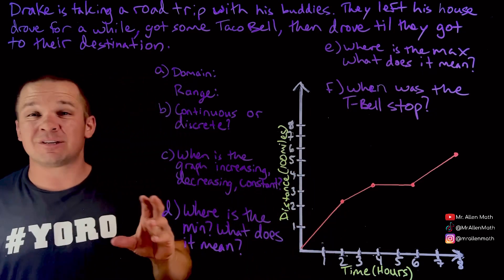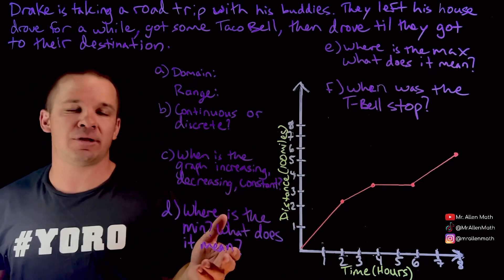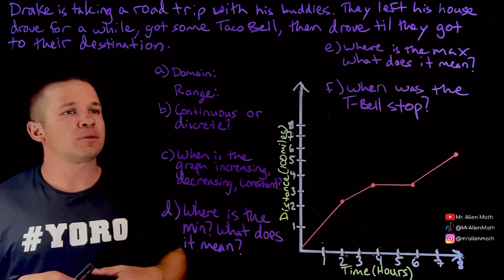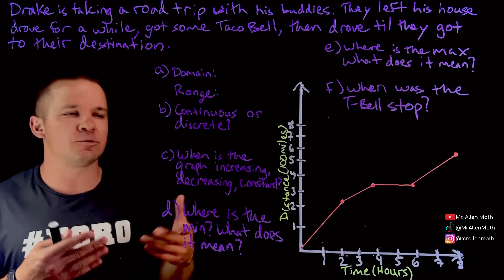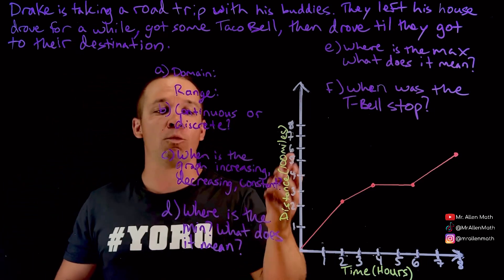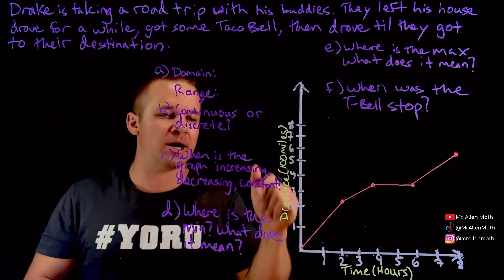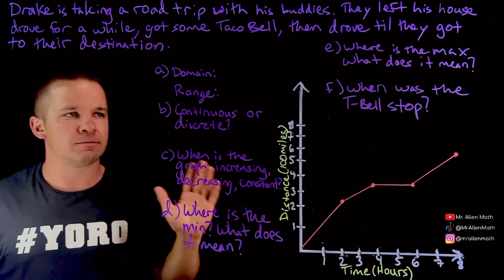A lot of times you'll see them scale differently, but they might just use an integer there. Population models, they'll do like millions of people or thousands of people or 100,000s, 10,000s, whatever. So this one here is distance in 100 miles, so 100, 200, 300, so on. Time is just those numbers.